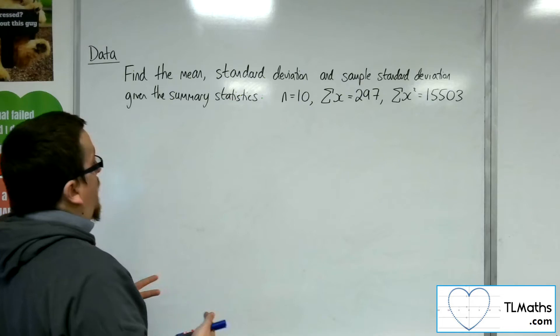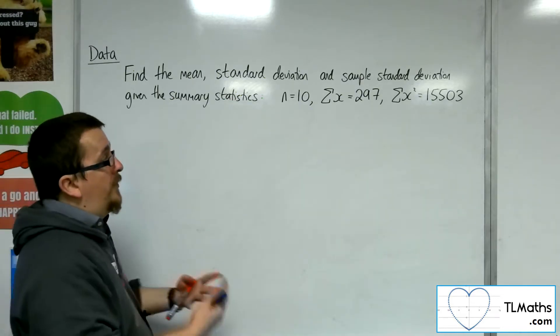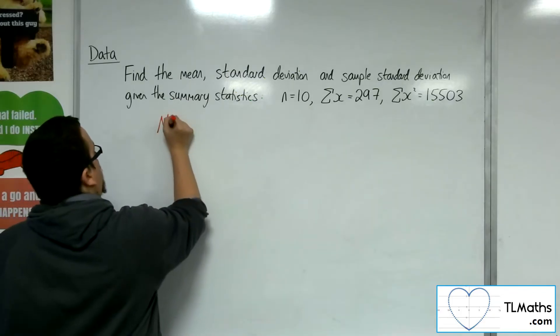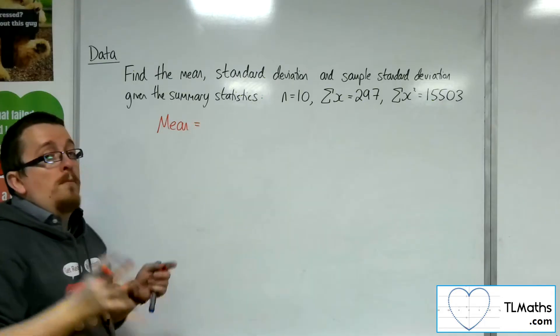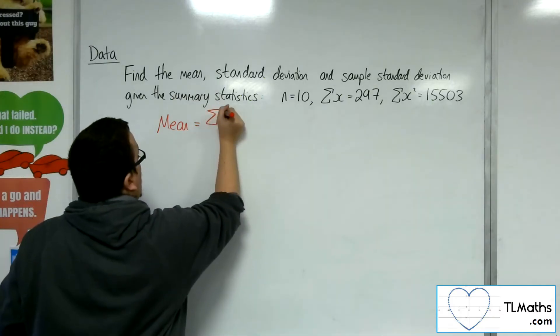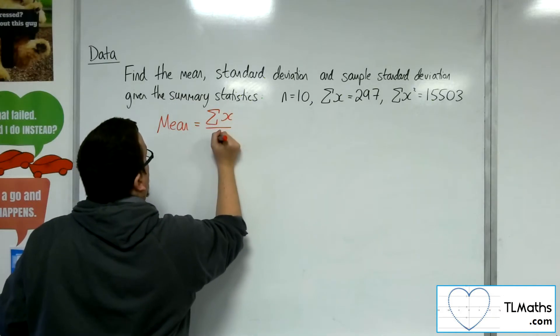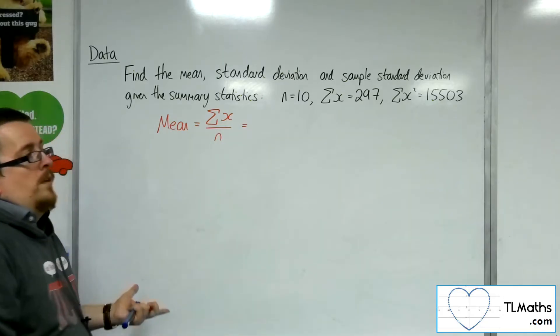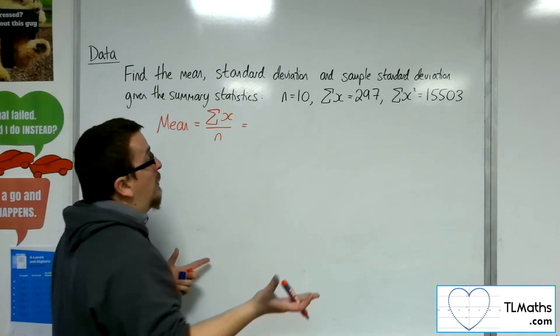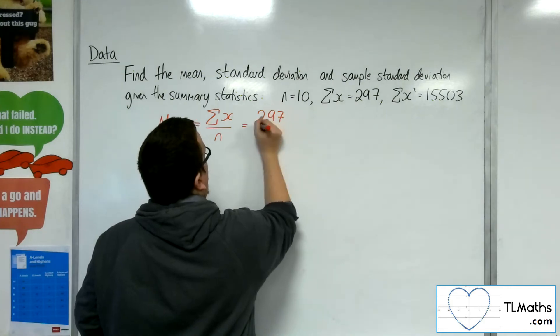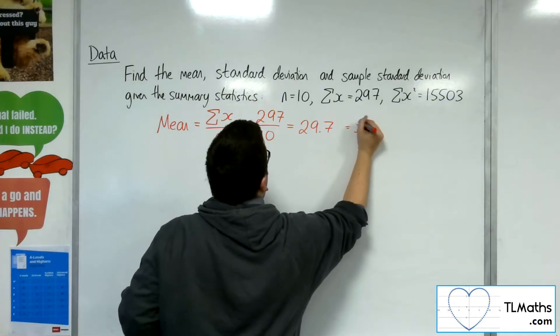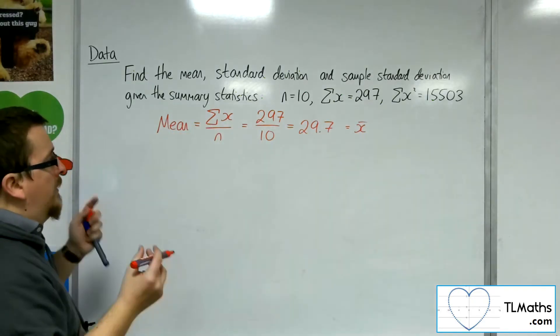Now in the question here, we're asked to find mean, standard deviation, and sample standard deviation. Now the mean value, you need to remember, because this isn't given to you, that is the sum of the x's divided by how many there are. You know that from GCSE, it's just written in summary statistic form. So that would be 297 divided by 10, and so 29.7 is the mean. So that's my x bar.